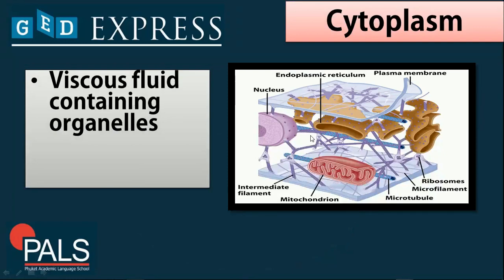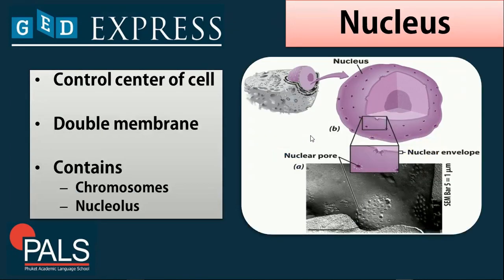Next we have the cytoplasm, which is a viscous fluid that contains organelles. This is present in both animal and plant cells. Next we have the nucleus, the control center of the cell, because it carries the hereditary material which is the DNA, and it also contains the chromosomes. The nucleus is a double membrane structure and contains both chromosomes and the nucleolus, which carries the genetic material.